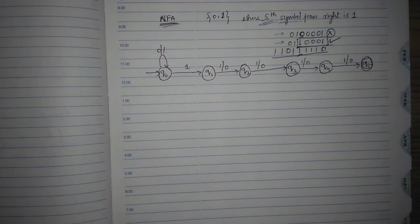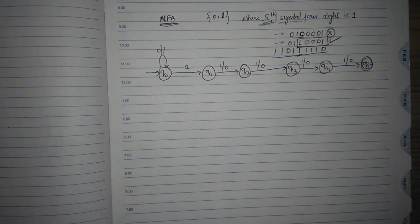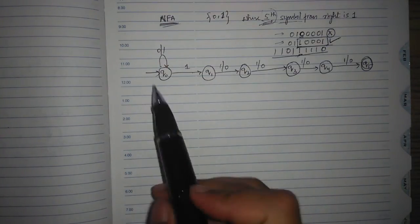So you can write any string with the fifth symbol from the right has 1, and that string will be accepted by this NFA.